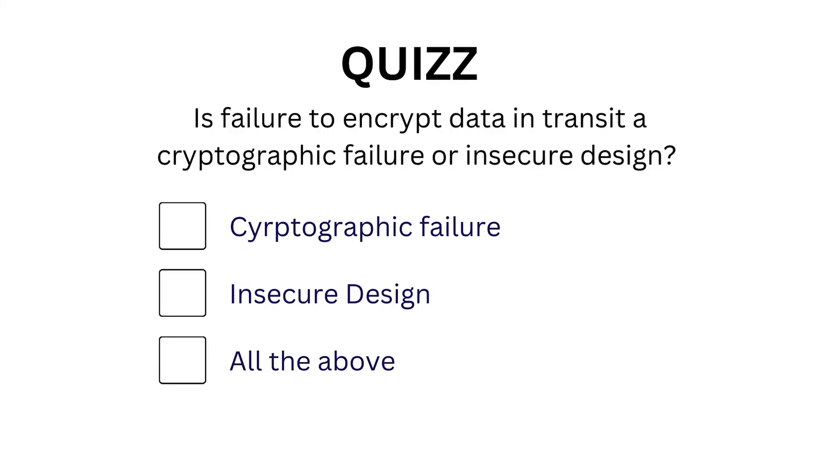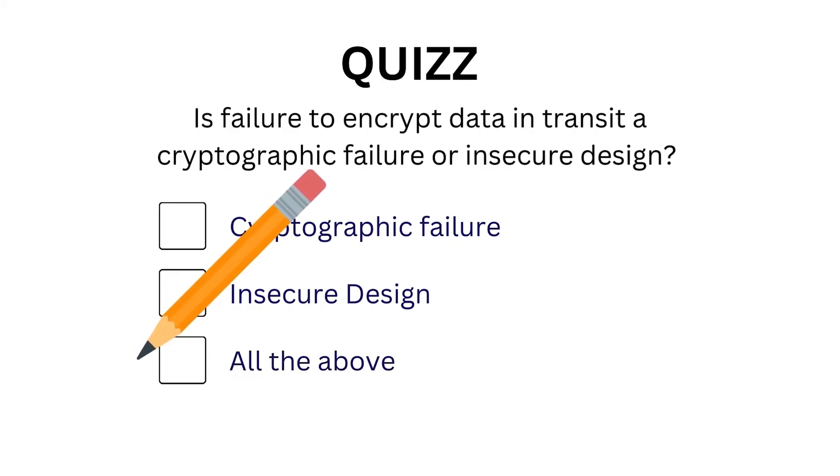Now, insecure design can be a little bit ambiguous as to what exactly belongs in this category versus another. Whilst I generally love the OWASP Top 10, I find this category a little confusing. For example, when we talked about cryptographic failures, we talked about encrypting information. Not encrypting data in transit gives exposure to a man-in-the-middle attack — is this a design flaw or a cryptographic flaw? Well, it's actually both, because we've designed the system that way but we're also not correctly encrypting data.